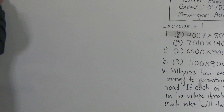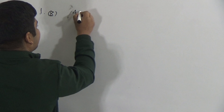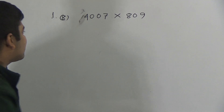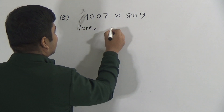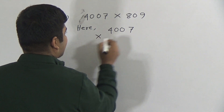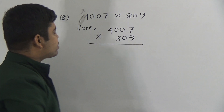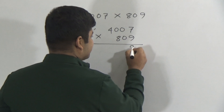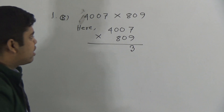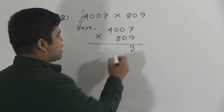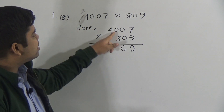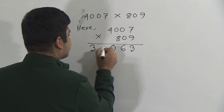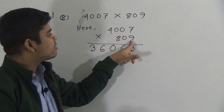4007 multiplied by 809. We have already solved such types of problems in our previous classes. First of all, we multiply 4007 by 9. 7 nines are 63 — write 3, carry 6. 9 zeros are 0 plus 6 equals 6. Multiply 0 with 9: 9 zeros are 0. Multiply 9 with 4: 9 fours are 36, write 36. The ones place digit is done.